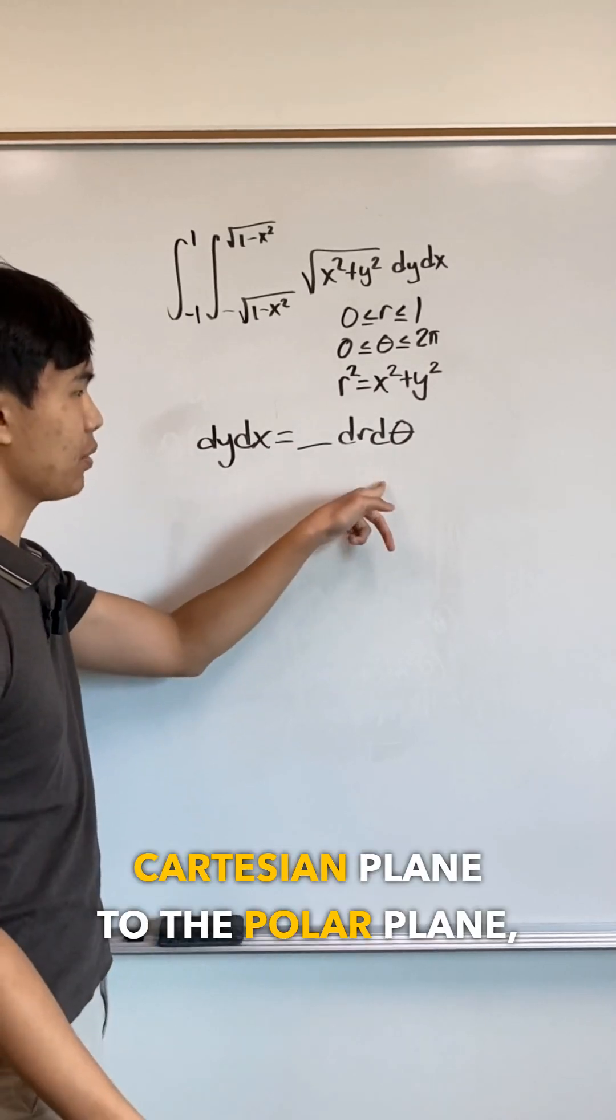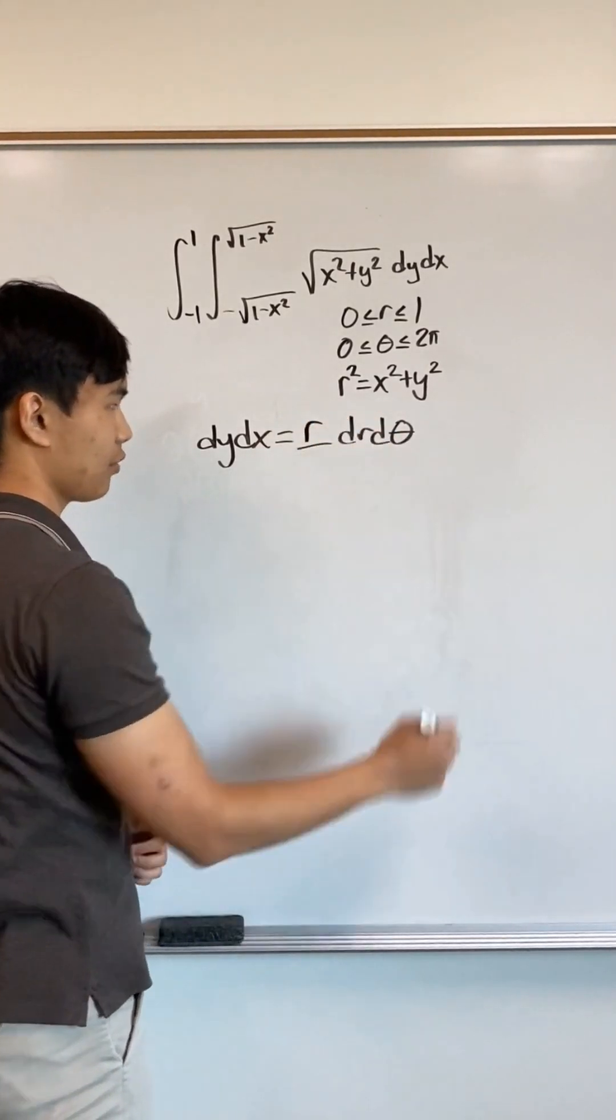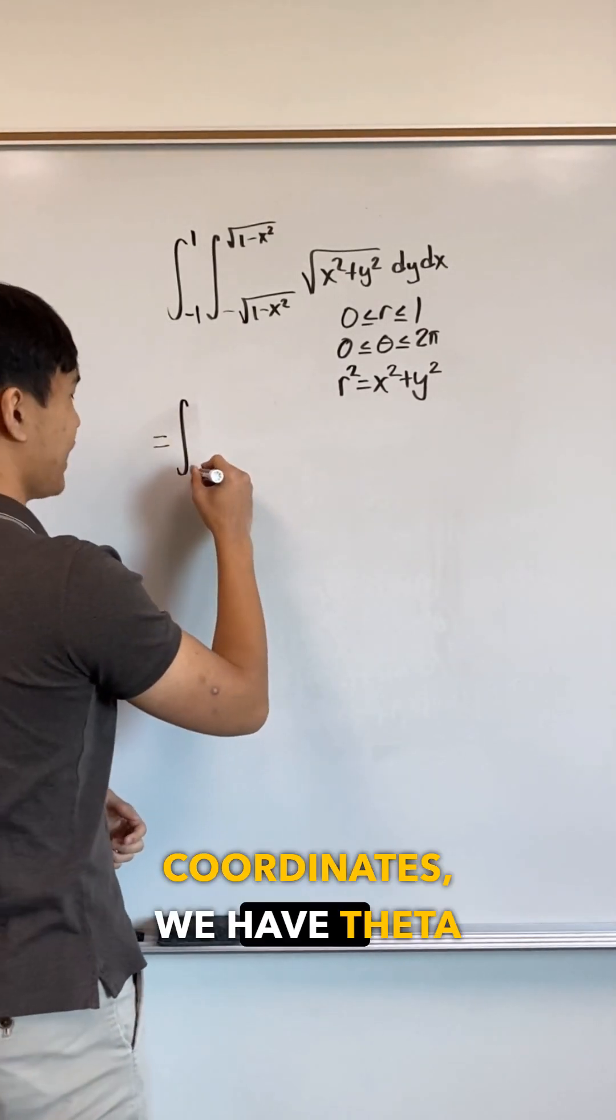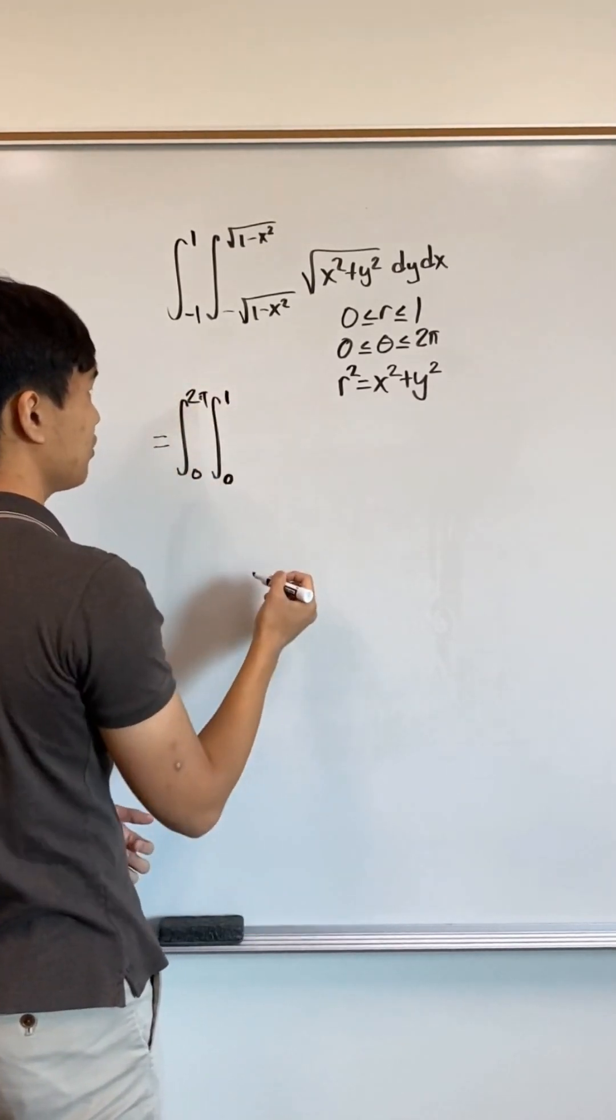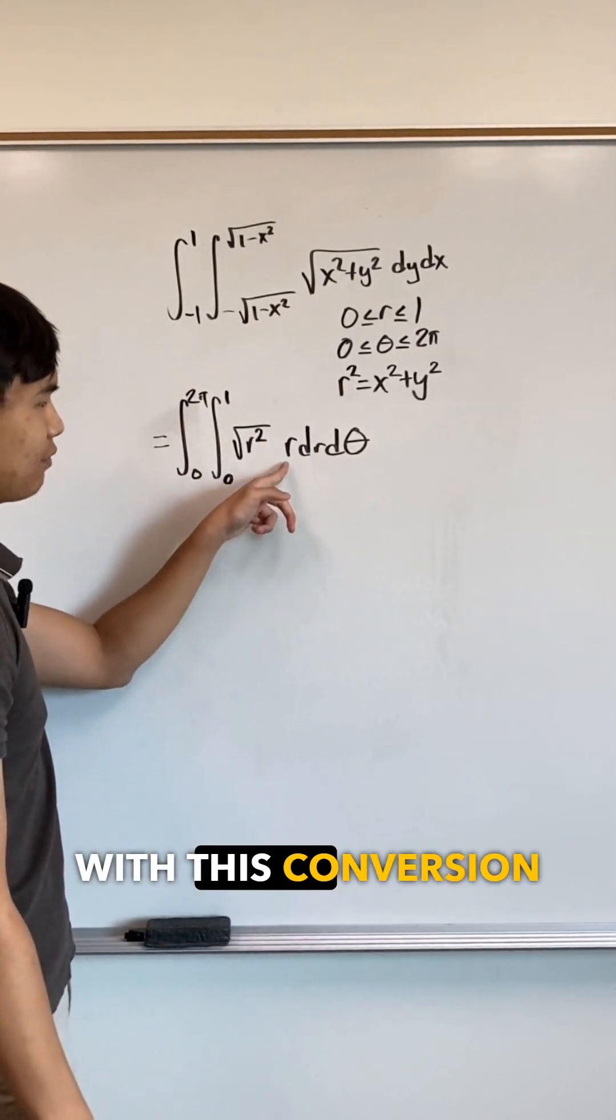So we find that going from the Cartesian plane to the polar plane, we have a conversion factor of r. Rewriting our integral in polar coordinates, we have theta bounds from 0 to 2 pi, r bounds from 0 to 1, our integrand, and our differentials with this conversion factor.